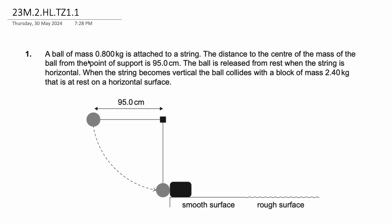A ball of mass 0.800 kg is attached to a spring. The distance to the center of the mass of the ball from the point of support is 95 cm. The ball is released from rest when the string is horizontal. When the string becomes vertical, the ball collides with a block of mass 2.4 kg that is at rest on a horizontal surface.